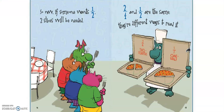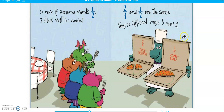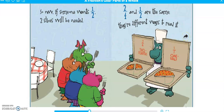So now if someone wants one half, two slices will be needed. Two fourths and one half are the same — they're different ways to read it. Do you see that kiddos? So one half of the pizza is still equal to two fourths, because you put those two together and two out of those four is the same as one half. They're just written and read a little differently.